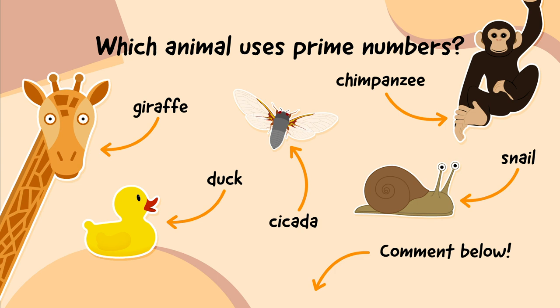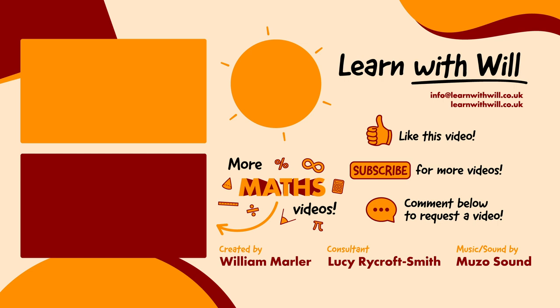Scientists believe that one of these animals uses prime numbers to avoid being attacked by predators — which one do you think it is? Tell me in the comments below. If you like this video, make sure to give it a thumbs up. Subscribe to learn more science, English, and Maths with Will, and let me know what you want to learn next by commenting below or emailing info@learnwithwill.co.uk.